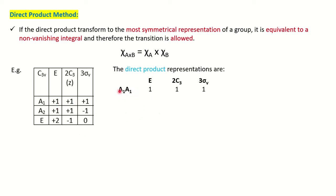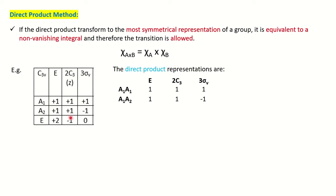To find the direct product, you multiply two irreducible representations. Let's take A1 × A1 — multiply the character of A1 two times for each symmetry operation: 1×1=1, 1×1=1, and 1×1=1. All give positive values. This is the most symmetrical representation of the group — where you get all positive values. So we can say this particular transition is an allowed transition.